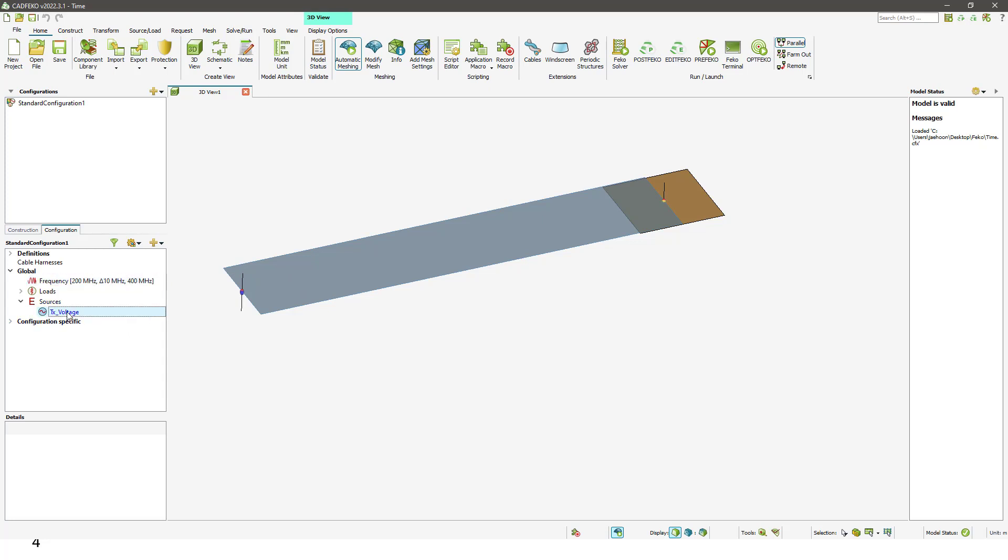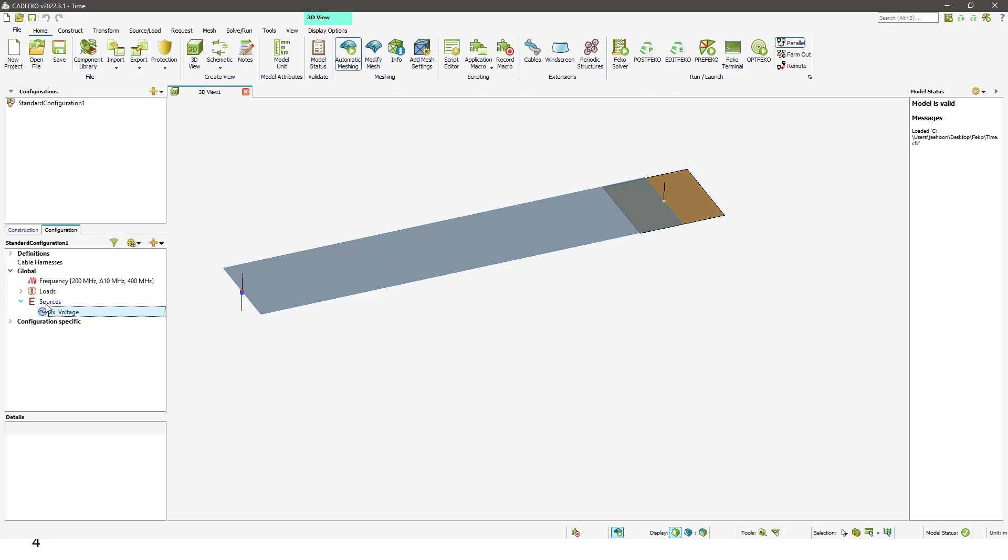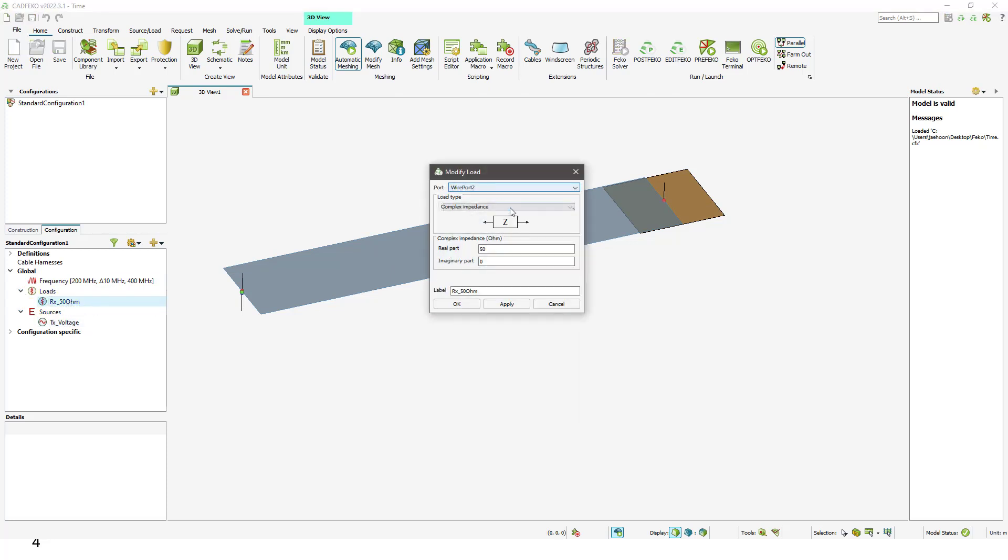And then the source voltage is connected to the monopole. 50 ohm is connected to the dipole antenna.